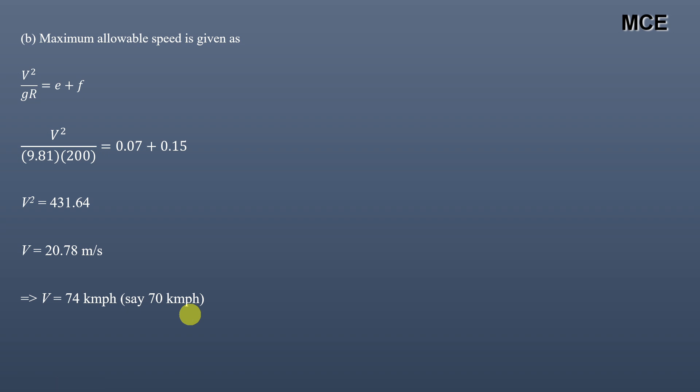This is how you can calculate the super elevation rate for any road using the IRC method, and also how to find the maximum allowable speed if the design super elevation is not to be exceeded. I hope this solution video was clear and effective. If you still have doubts, you can write them in the comment box below and I will be happy to answer. Thanks for watching Master Civil Engineering and stay tuned.